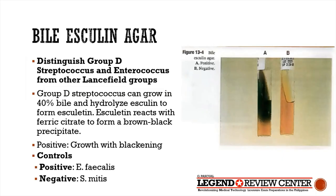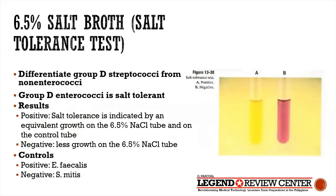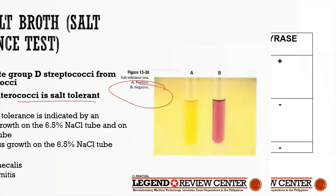The 40% bile is selective, and Group D strep will hydrolyze esculin to form esculetin. Esculetin reacts with ferric citrate to form a brown-black precipitate, which is the positive result. Another test is the 6.5% salt broth, which also differentiates Group D strep from non-Enterococci. Group D Enterococci are salt-tolerant.